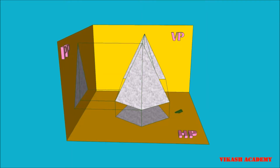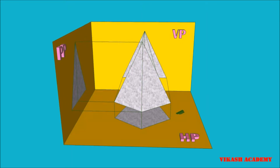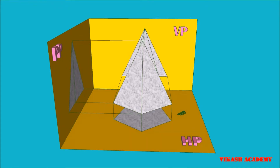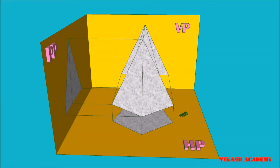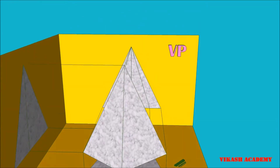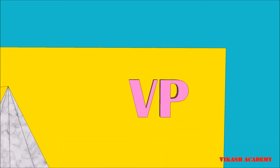So we are going to see this problem in first angle projection. We will obtain a right hand side view on the left profile plane and a left hand side view on the right profile plane.